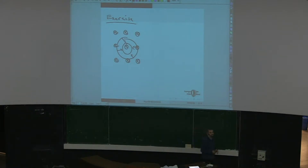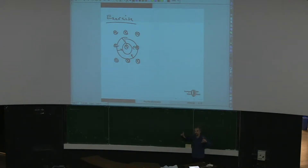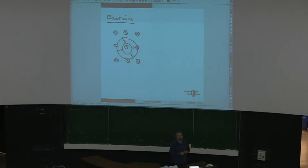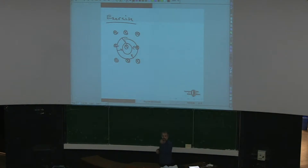So what will be the direction of the current induced? Initially you have this big ring and you contract it in this uniform magnetic field. What will be the direction of the current — clockwise or counterclockwise? The class responds: clockwise.